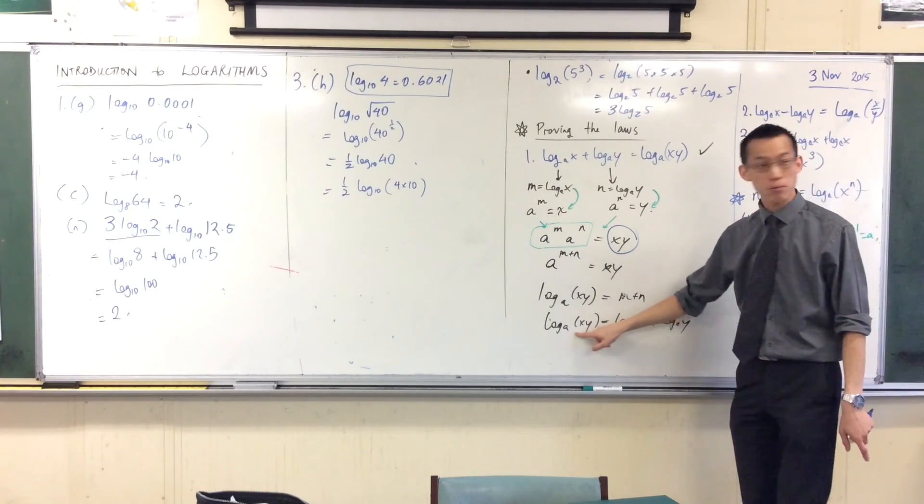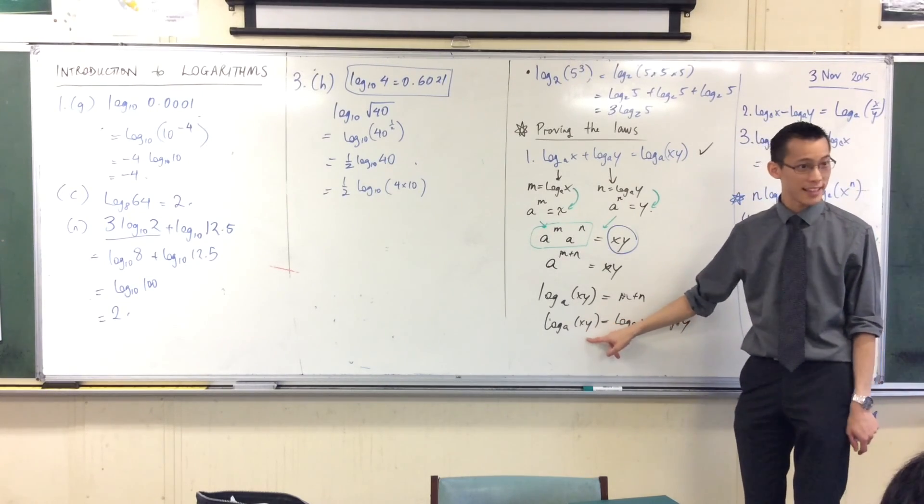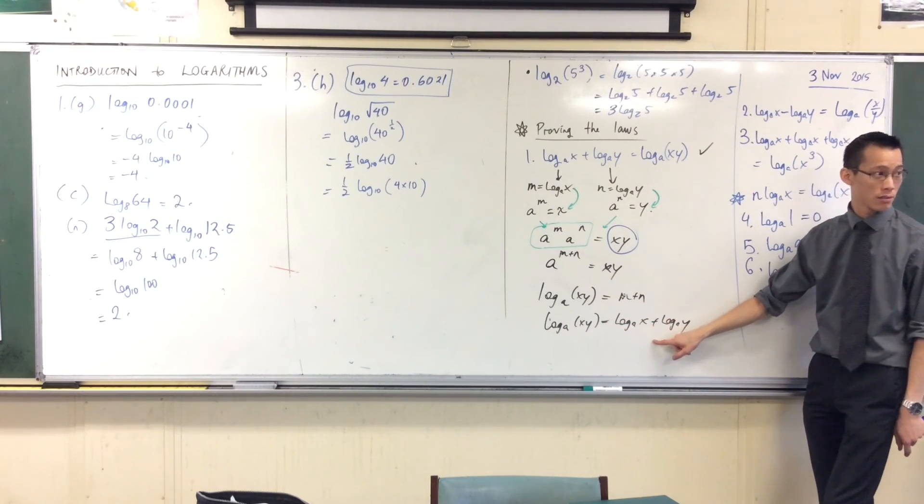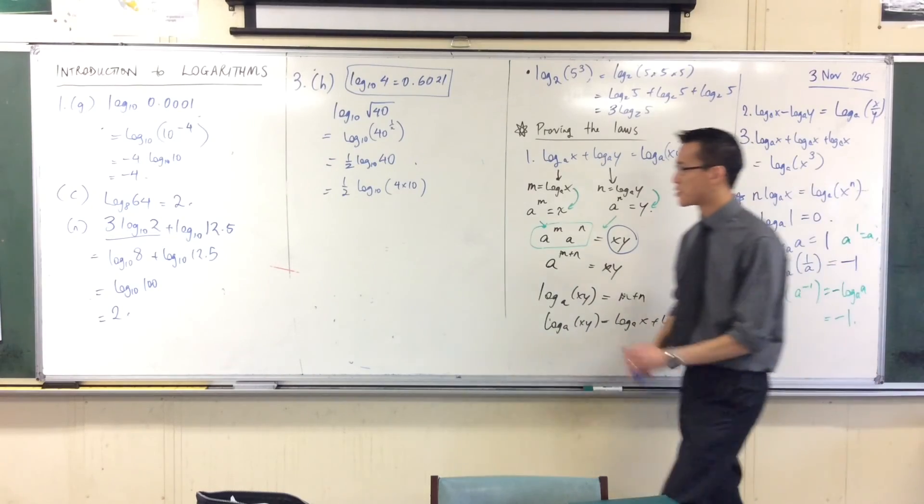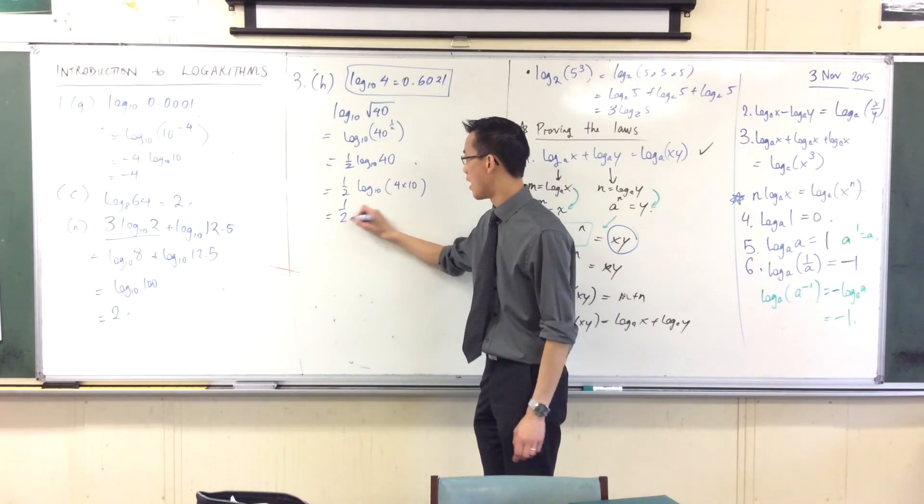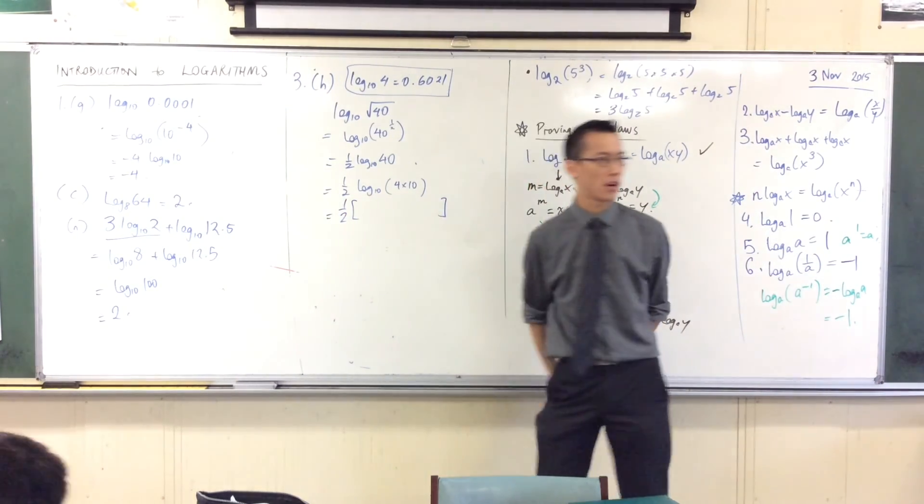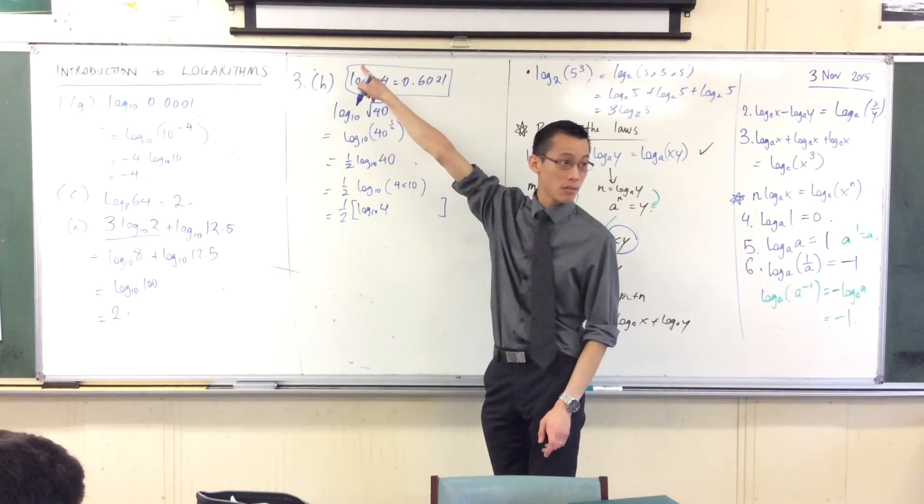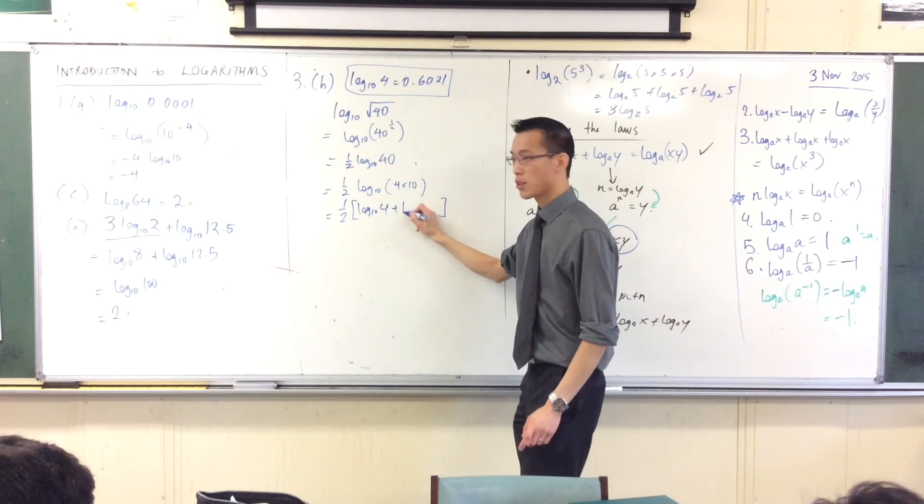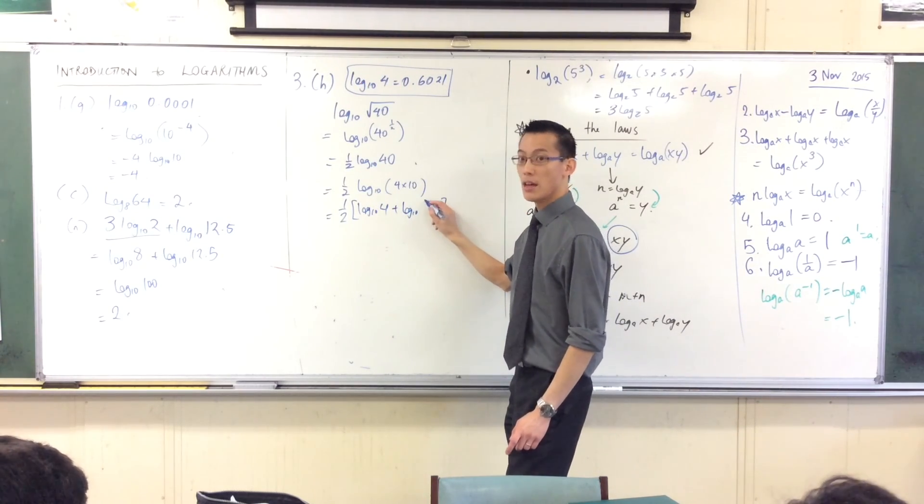Now, why did I turn this into times? And the reason why is because right here, if I have a product in here, if I'm multiplying two things together, I can break it apart into two logs. Do you see that? One log, break it into two. So, when I rewrite this, I've got half. And what are the two logs that I've got that I'm adding together? Log base 10 of 4. That's good. Plus, what's the other one? Log base 10 of 10.